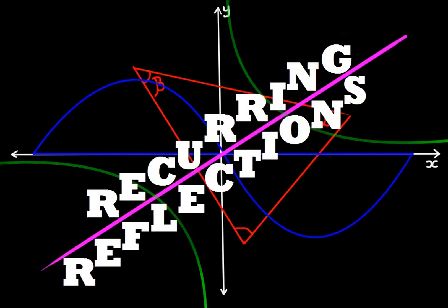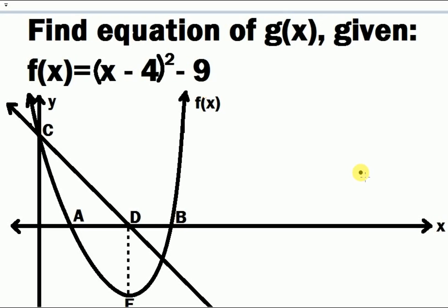Welcome to another tutorial by Recurring Reflections. Today we will be finding the equation of a straight line given the parabola. Our straight line is G of X and our parabola is F of X. The equation says: find the equation of G of X given F of X, which is equal to open bracket X minus 4 close bracket squared minus 9. So let's look at our sketch.